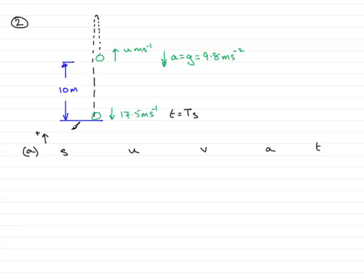Now, first of all, do I know s? Yes, I do. I know that s represents displacement, not distance. So taking this point as my starting point, when this particle goes up and comes back down, the displacement from here, when it arrives down here, is negative 10. So s equals minus 10 meters.